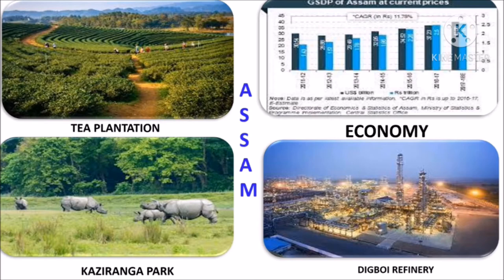Economy of Assam — Tea: During 2019-20, production of tea in the state stood at 694.53 million kilograms. Tea is the major crop that drives Assam's economic growth. It accounts for nearly 15% of the world's production of tea and around 50% of India's production of tea. 630 million kilograms of tea was exported from Assam. The economy of Assam is the largest contributor to the Indian economy among the seven sister states.